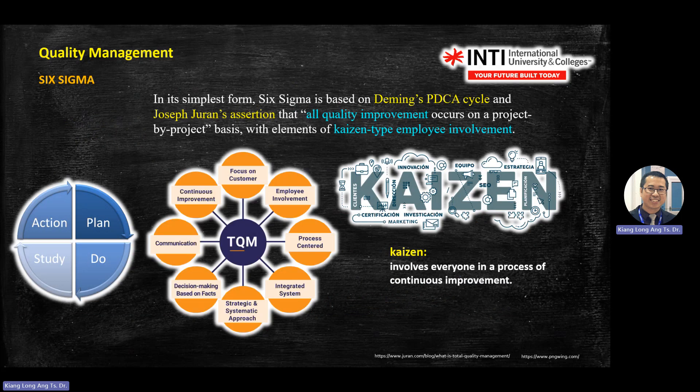Kaizen is a Japanese word and one of the tools used in quality management. Kaizen means involving everyone in the process of continuous improvement — Plan, Do, Study (or Analyze), and Act — which is PDCA.